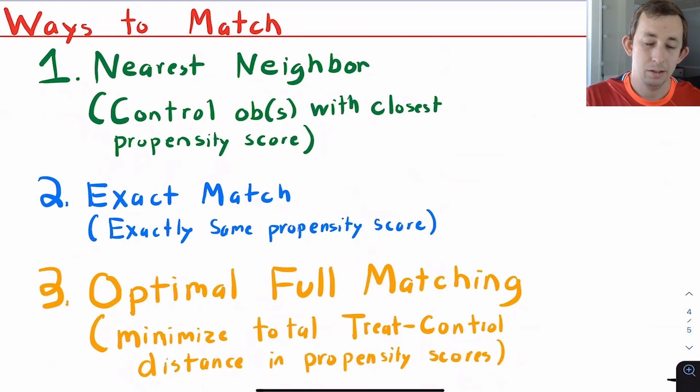You can do an exact match where you say they can't just be sort of close, they have to be exactly the same. And so this is helpful if you have a lot of people in the control group who are really close to one person in the treatment group. You say, I don't care who the nearest neighbor is, I just want an exact match.